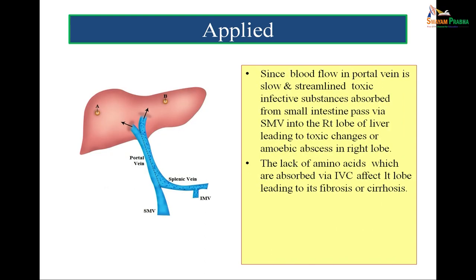The flow in the portal vein is streamlined. Whatever ingested toxic substances are taken, they will pass from the superior mesenteric vein into the right lobe of the liver, and toxic changes will take place in the right lobe. This is also why amoebic abscess is more common in the right lobe of the liver — the infection comes down from the superior mesenteric vein and due to streamlined flow it prefers the right lobe. On the other hand, amino acids like choline and methionine are absorbed earlier in the region of the inferior mesenteric vein drainage, so their availability to the left lobe is less due to laminar flow. Therefore, deficiency features of methionine and choline resulting in cirrhosis are more prominent in the left lobe compared to the right lobe of the liver.